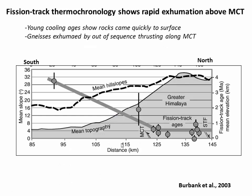Further evidence for out-of-sequence thrusting in the Himalaya comes from fission track thermochronology, which shows very rapid exhumation above the main central thrust. A fission track age records the amount of time since the rock cooled through 100 degrees Celsius. Rocks above the main central thrust have traveled upwards from 100 degrees Celsius in less than half a million years — very quickly from a hot place up to the surface. In contrast, rocks out at the tip of the wedge, or to the south, have taken up to 4 million years to transit the last few kilometers of crust. This is further evidence for out-of-sequence thrusting in the rear of the wedge.